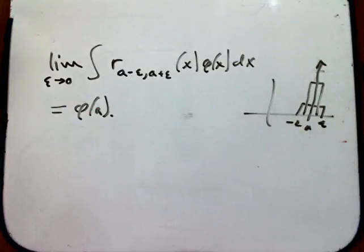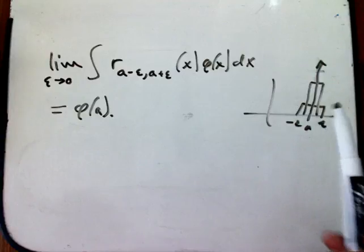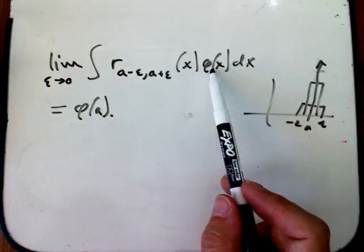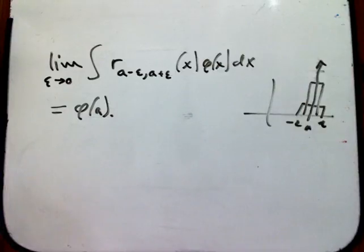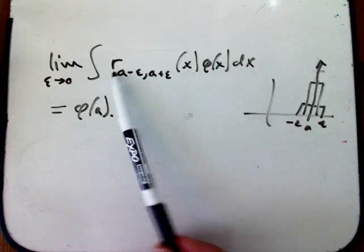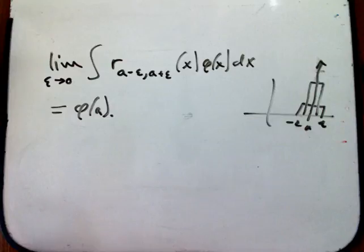So this is really nice. It's telling us, even though these things don't have a limit as a function, if we consider it as something that eats test functions, a distribution, it's something that does something extremely simple to that function. It just evaluates at a point. Evaluating a function at a point is about the simplest thing you can do to a function. It's just that now we're doing that to the test function, not trying to evaluate the delta, which is not really going to be a function at all.